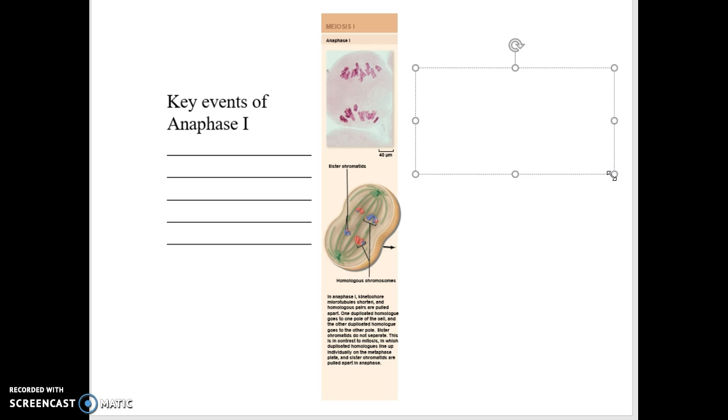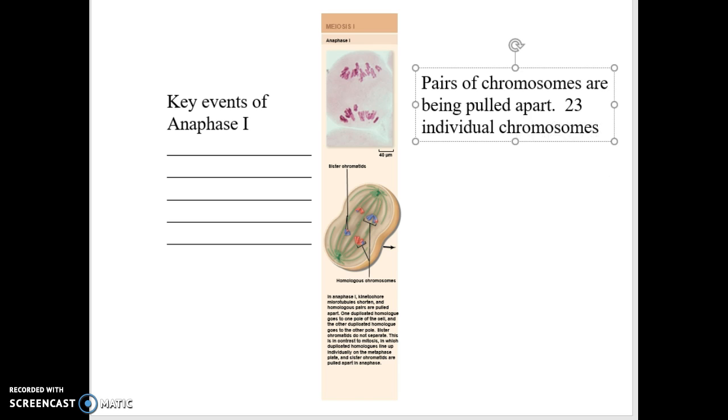So the pairs of chromosomes are being pulled apart. So you will have 23 individual chromosomes going to each side of the cell.